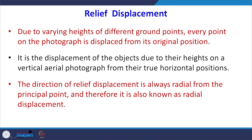Because the ground surface is undulating and different points are situated at different elevations, every point on the photograph when we take from a certain height is displaced from its original position. Either it is due to high topography or due to depression. This displacement of the object is due to the height and it is present on the aerial photograph. It causes the horizontal displacement of the true position of the object.